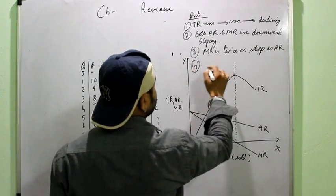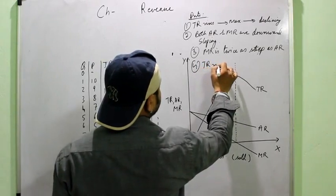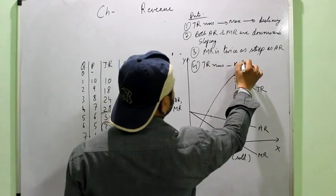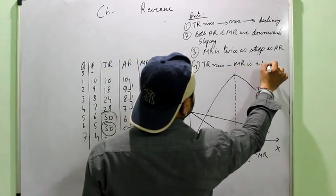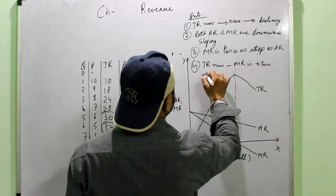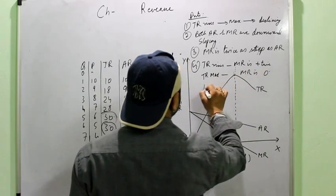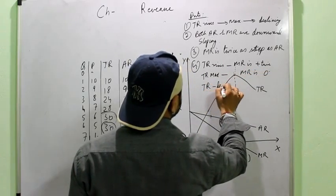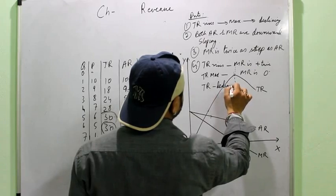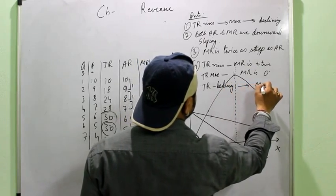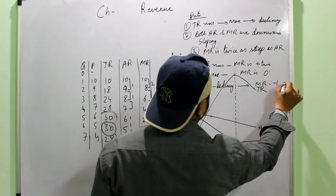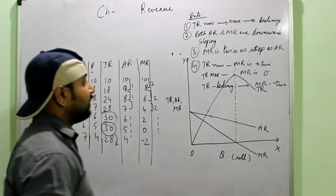Then we also observe that TR rises till MR is positive. TR is maximum when MR is zero. And TR starts declining when MR is negative. Right?